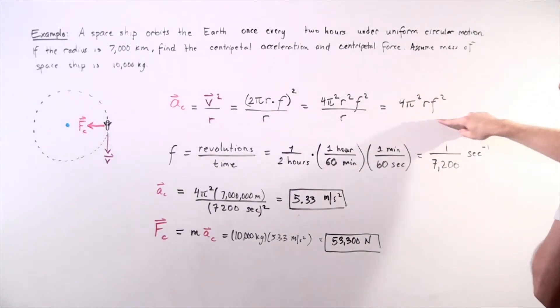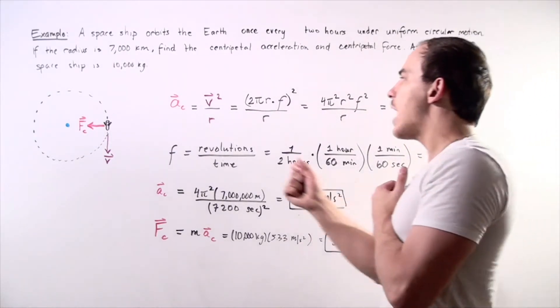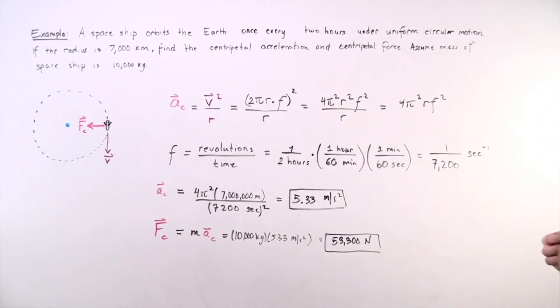This is the equation that we want to use to find our acceleration. We know what the 4 is, we know what the pi is, we know what R is, we don't know what F is.